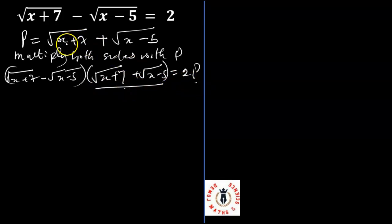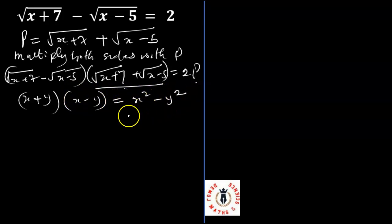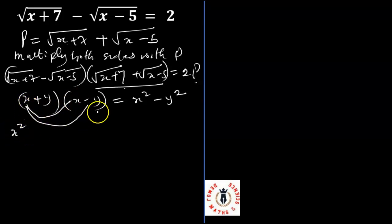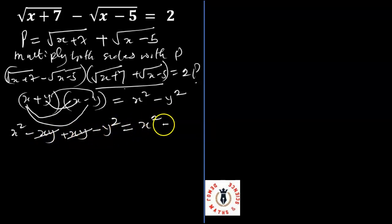Remember, P equals the root of x plus 7 plus the root of x minus 5. Now, remember this expression: x plus y into x minus y equals x squared minus y squared. Here's why: x multiplies x is x squared; x multiplies minus y is minus xy; plus y multiplies x is plus xy; plus y multiplies minus y is minus y squared. So minus xy plus xy becomes zero, and the expression simplifies to x squared minus y squared.